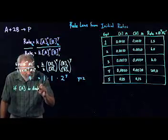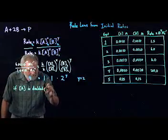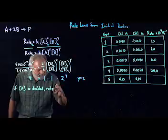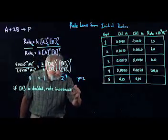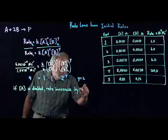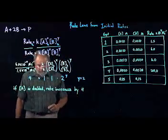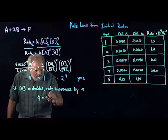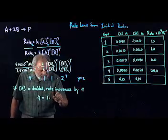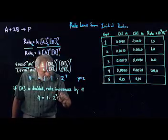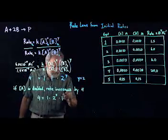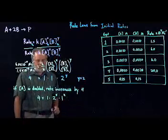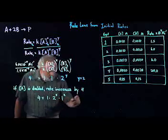So 4 equals 1 times 2 to the x times 1 to, well, we already know that exponent. So x equals 2 as well.